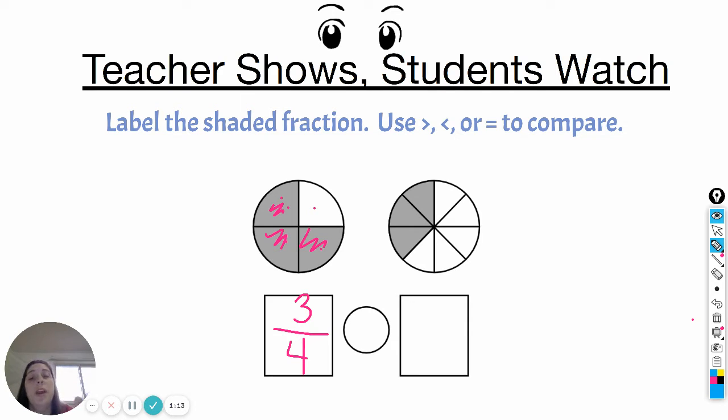Now let's figure out my fraction for the other picture. One, two, three, four, five, six, seven, eight pieces. So my denominator is eight. One, two, three of them are shaded.